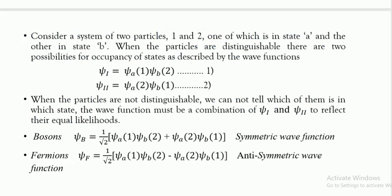Consider a system of two particles — particle one and particle two — in states a and b respectively. If we consider the particles to be distinguishable, the possible wave functions for occupancy of the states are: psi_1 = psi_a(1) × psi_b(2), and psi_2 = psi_a(2) × psi_b(1). If the particles are distinguishable, we can write both wave functions and interchange their states.